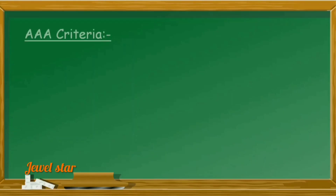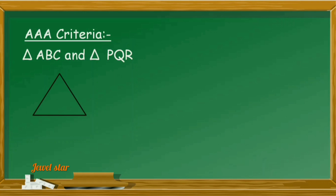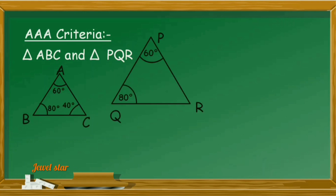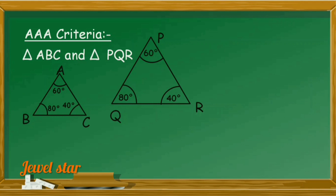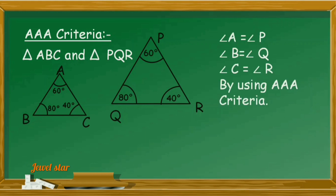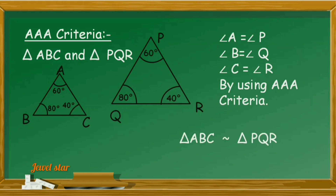Let us first talk about the AAA similarity criteria. Consider triangle ABC and triangle PQR. Are they satisfying the AAA criteria? Are they similar? Yes, because their corresponding angles are equal: angle A equals angle P equals 60°, angle B equals angle Q equals 80°, and angle C equals angle R equals 40°. So, using AAA similarity criteria, triangle ABC is similar to triangle PQR.